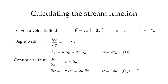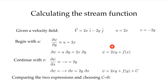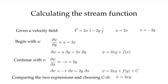Comparing the two expressions: from the u integration I have 2xy plus a possible function of x; from the v integration I have 2xy plus a possible function of y. Since there are no pure functions of x or y present in either expression, and choosing the constant as zero — which we can do from boundary conditions or arbitrarily — psi in this case equals 2xy.